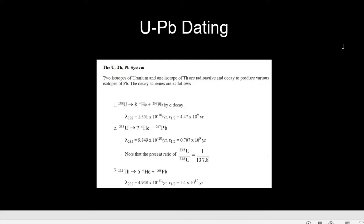However, uranium is always present in very minute amounts so that it does not pose a radioactive hazard. There is one challenge with this dating system: the daughter isotope lead-206 is also found naturally in many different places. This makes it difficult to differentiate between lead formed from radioactive decay and lead formed naturally.